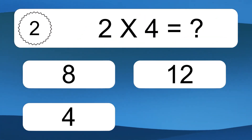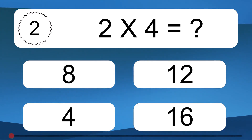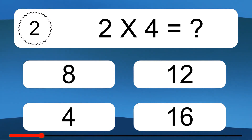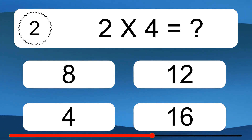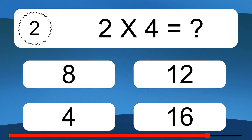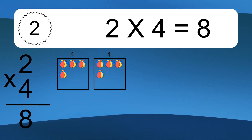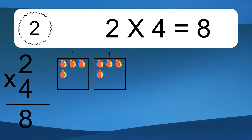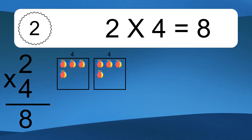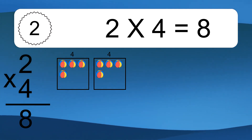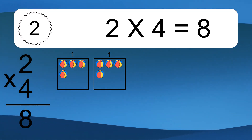2 times 4 equals what? 2 times 4 equals 8. We have 2 boxes, and each box has 4 colorful balls inside. If you count all the balls in all the boxes together, you will have 2 times 4 balls. This equals 8 balls.